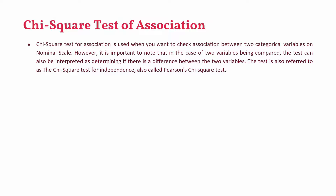An important test associated with Crosstab reports is the Chi-square test of association. Chi-square test of association is used when you want to check association between two categorical variables on nominal scale. It is important to note that when two variables are being compared, the test can also be interpreted as determining if there is a difference between them. The test is also referred to as the Chi-square test of independence, or the Pearson Chi-square test.